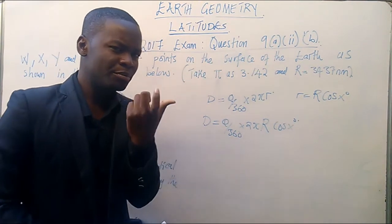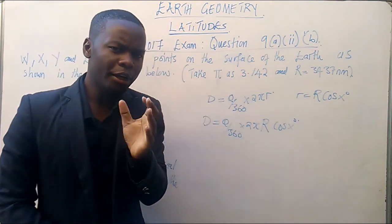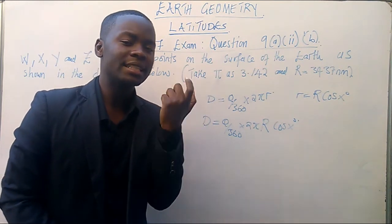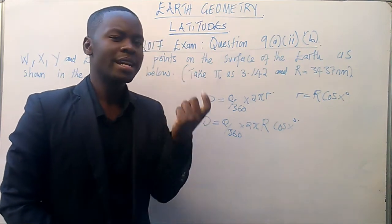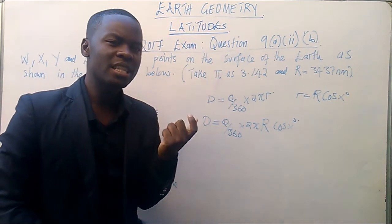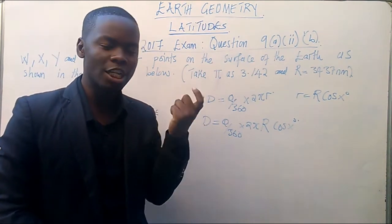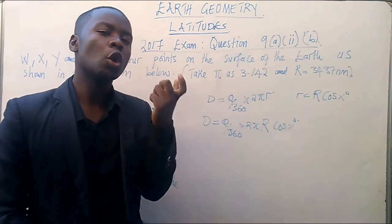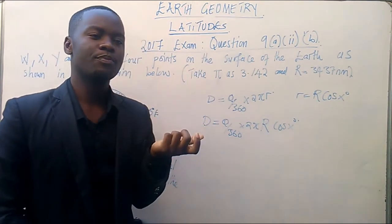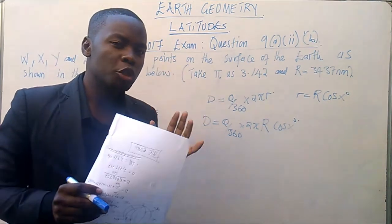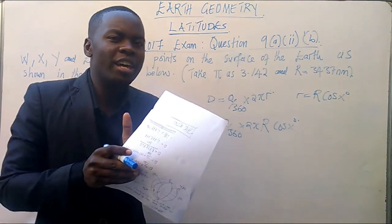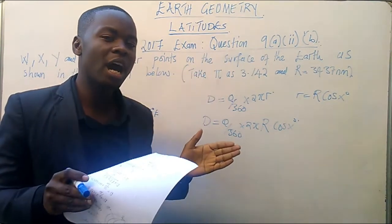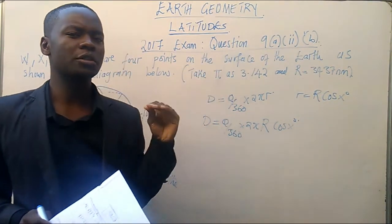Okay, so let me repeat myself. When we are calculating the value of theta on longitude, we are saying that theta is the difference in longitude. Now, when we are calculating theta on longitude, we are going to say that theta is the difference in longitude. Remember that when the longitudes are on the same part of the hemisphere, we subtract. On the different part of the hemisphere, we add. Very simple concept there.